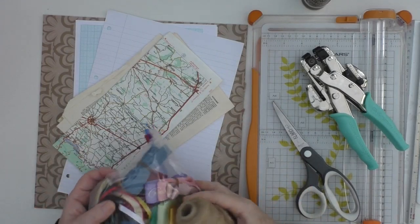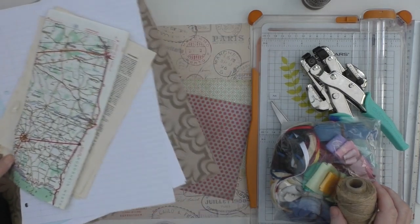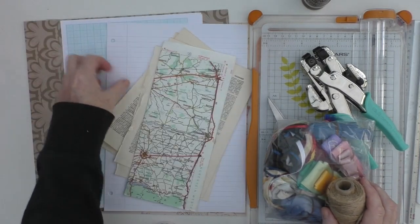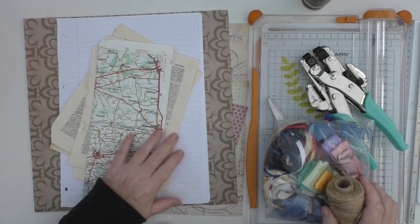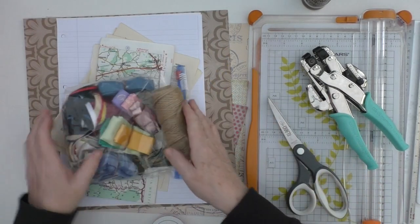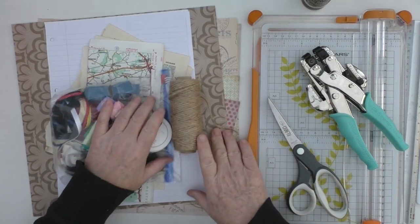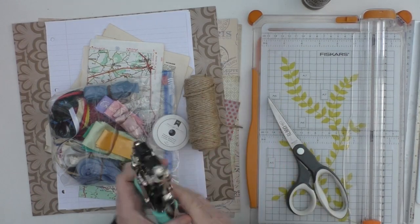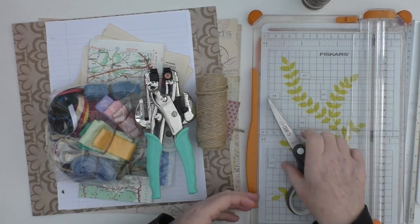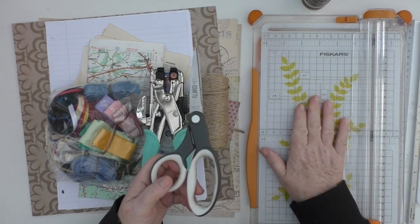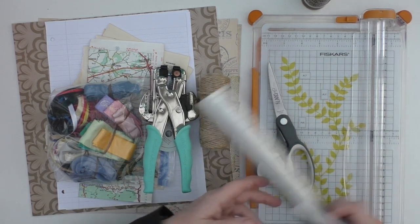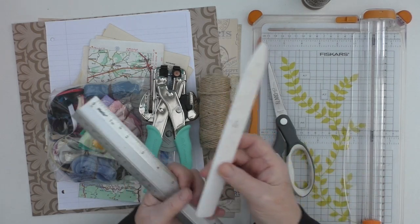To make these journals you will need paper of any description. It could be painted papers, it could be junk mail, it could be patterned paper from a pad, some ribbon, twine or something of that description to tie the journal, and you'll need a punch. It doesn't need to be a punch like this, just any standard punch. Scissors or a cutting board would be helpful and a ruler might be helpful if you want to measure.